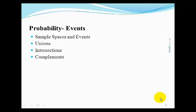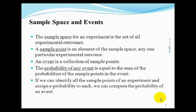In this section we will discuss events and different event relations. The sample space for an experiment is the set of all experimental outcomes. A sample point is an element of the sample space, also known as an experimental outcome. An event is a collection of sample points.